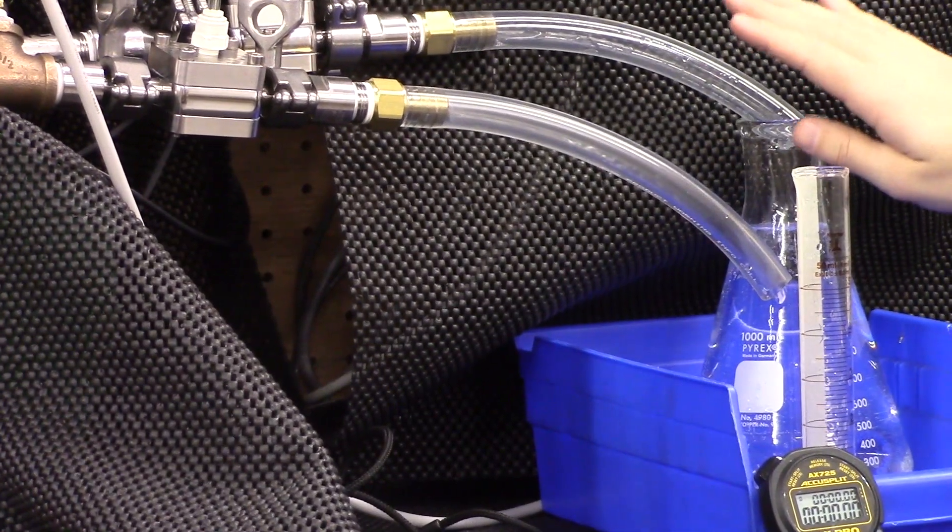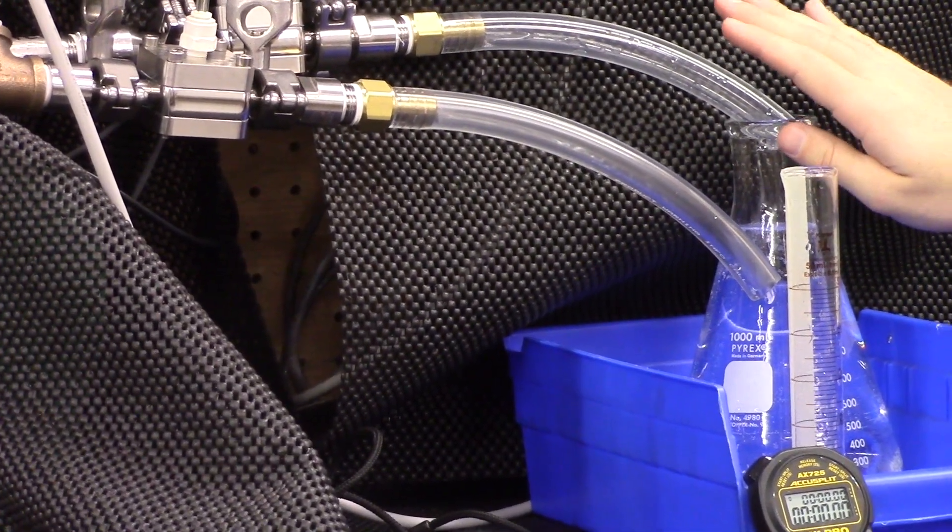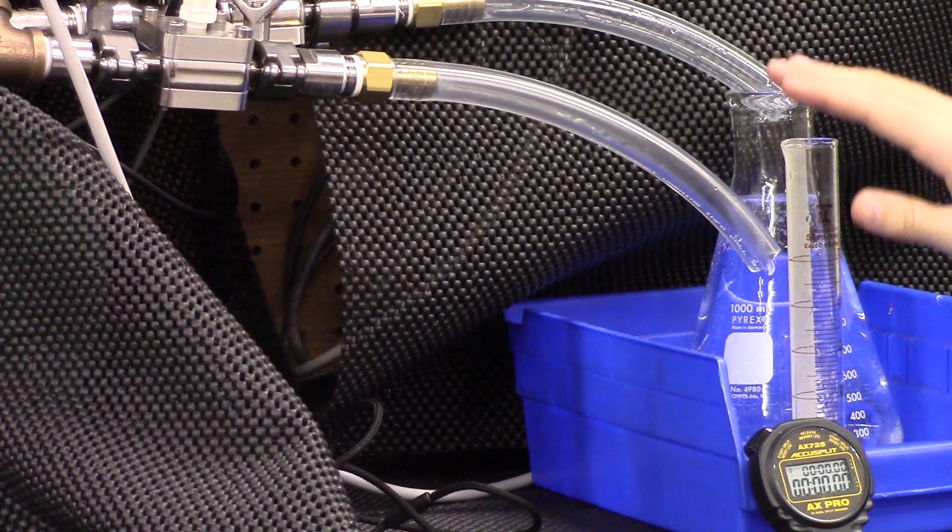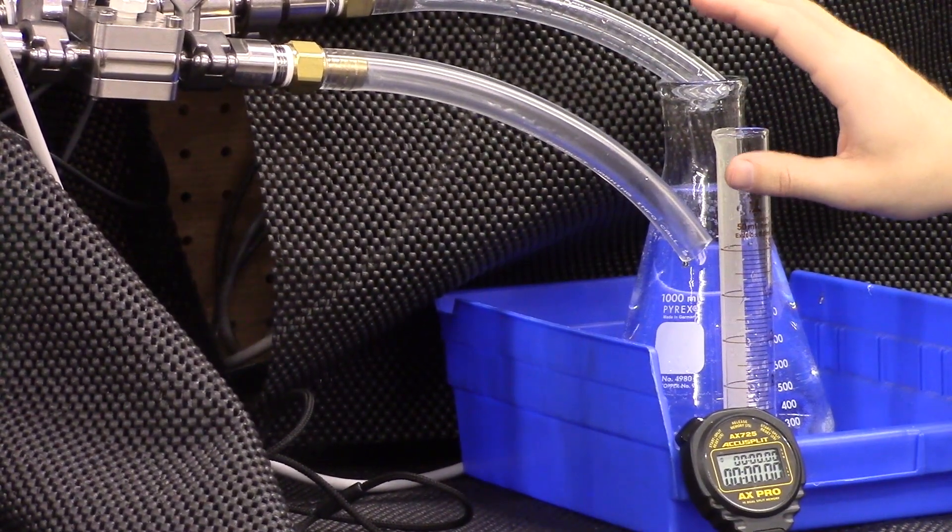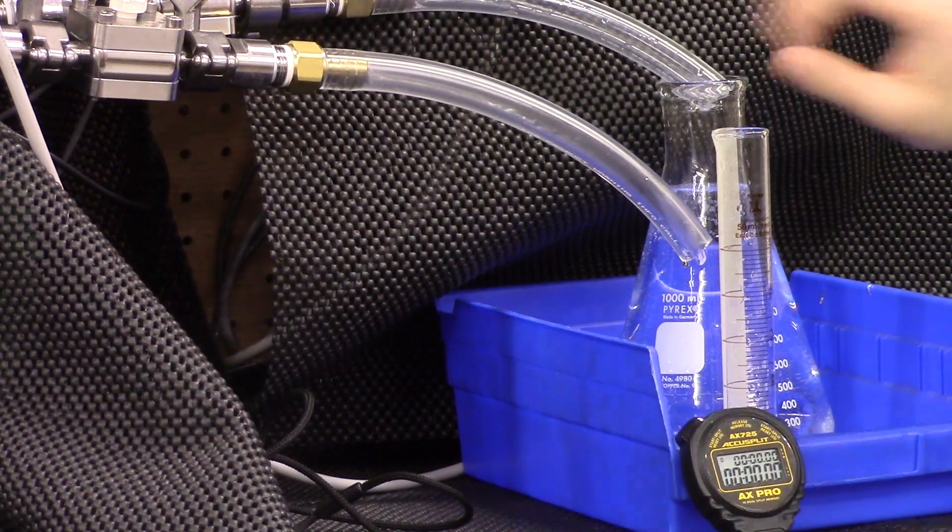So in one regulator, we're going to look for a 1000 milliliters per minute flow rate. And then in the other back pressure regulator and flow control system, we're going to look for a 10 milliliters per minute flow rate. So we will go ahead and start the system up now.